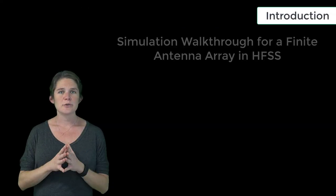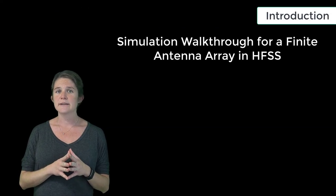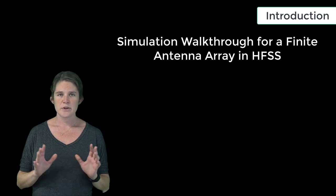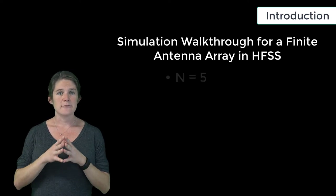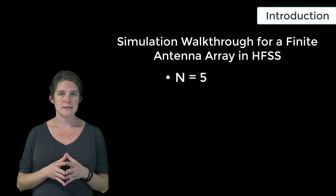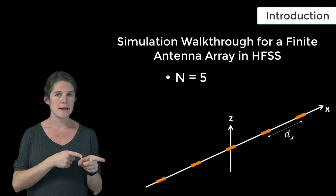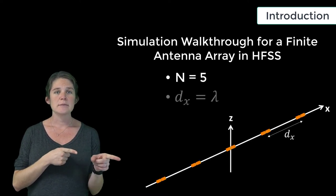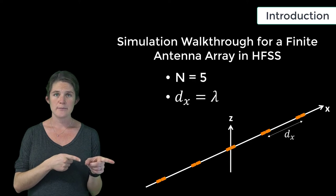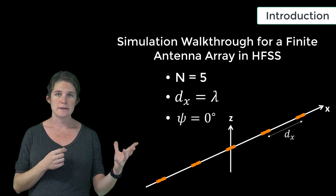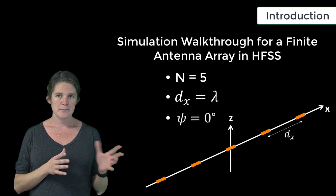In this module, we will do a walkthrough for simulating an array of antennas in HFSS. We will specifically be building an array of five half-wave dipole elements, arranged linearly along the x-axis, with an inter-elemental spacing of one wavelength, and with the feed phase constant along the length of the array.